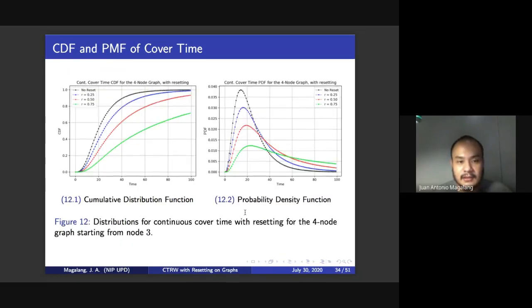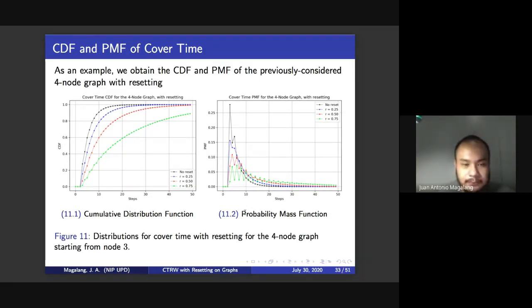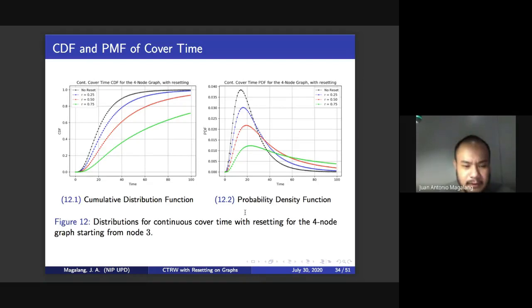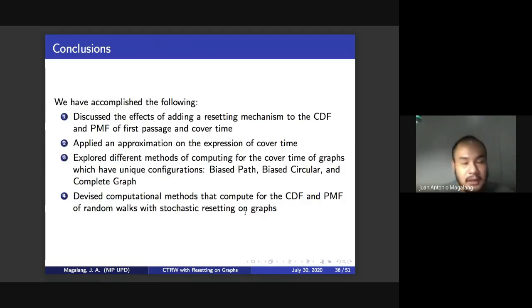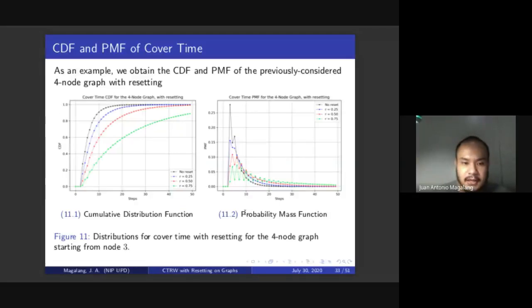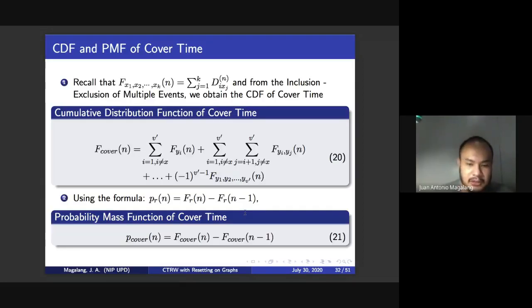So we have these two plots here for the CDF and PMF of cover time. Since, of course, these are just very simple graphs, there's not much of a more unique behavior. So we tried this actually on randomly generated graphs because of course our real life systems consider that this formulation here in equation 20 is not actually that efficient if you increase the number of nodes in the graph.